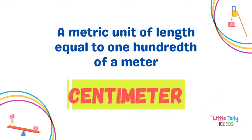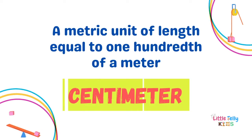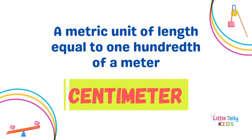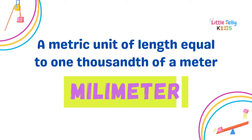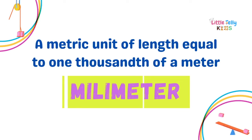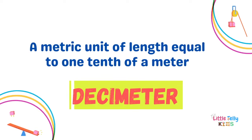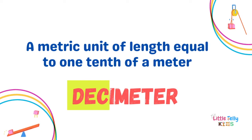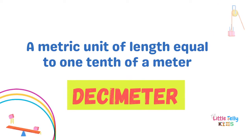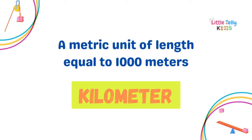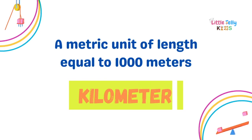A metric unit of length equal to one hundredth of a meter is Centimeter. A metric unit of length equal to one thousandth of a meter is Millimeter. A metric unit of length equal to one-tenth of a meter is Decimeter. A metric unit of length equal to one thousand meters is Kilometer.